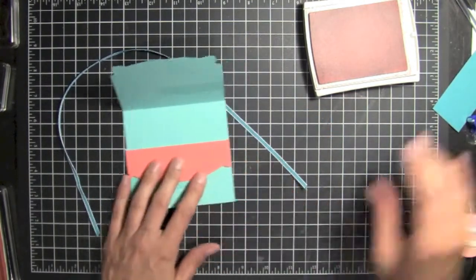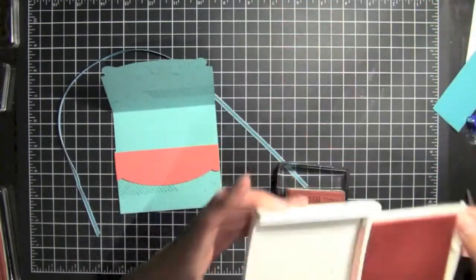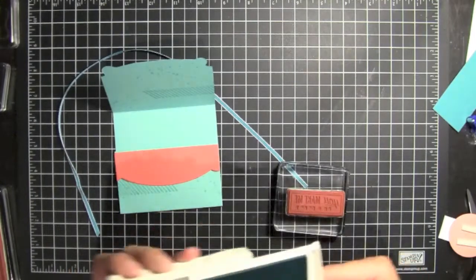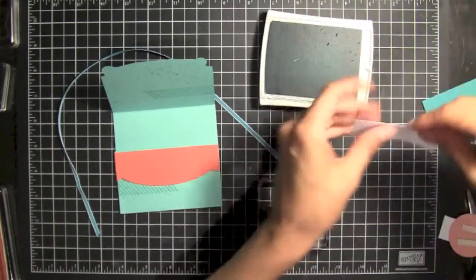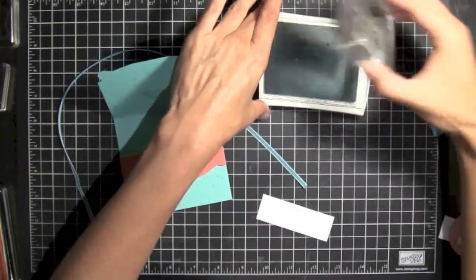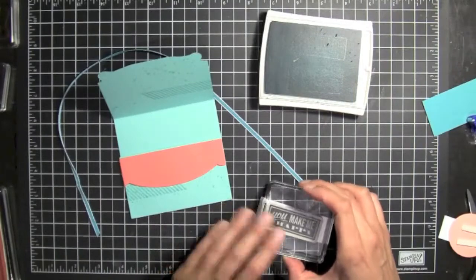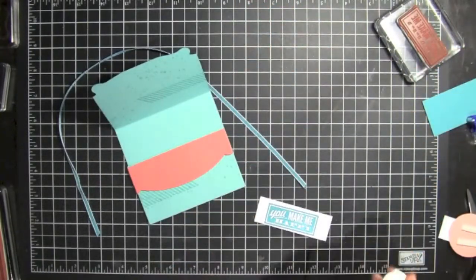And then I've stamped You Make Me Happy. And I've used the Bermuda Bay for that and for the inside on a piece of Whisper White cardstock. So we'll just make sure we ink that up really well. So we'll stamp that and then we'll trim it out.